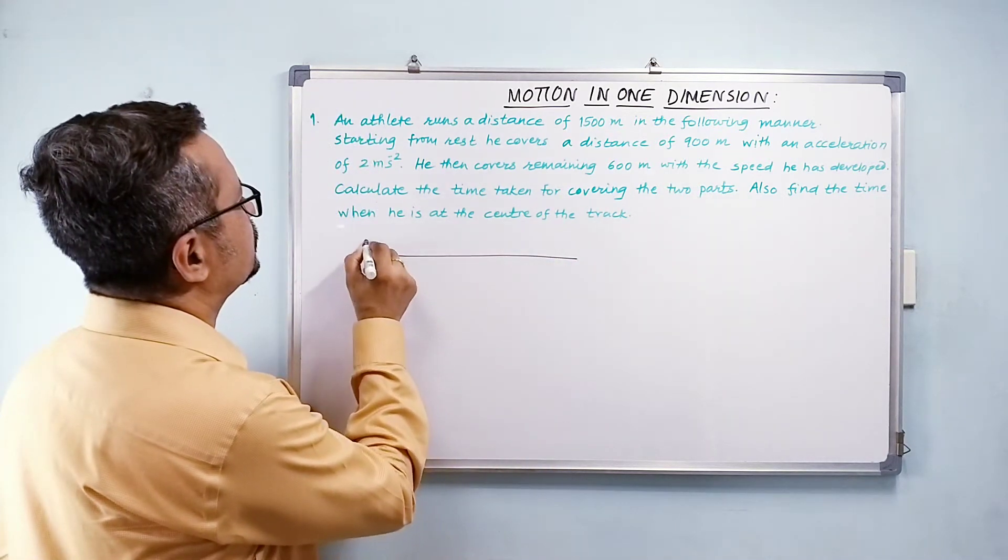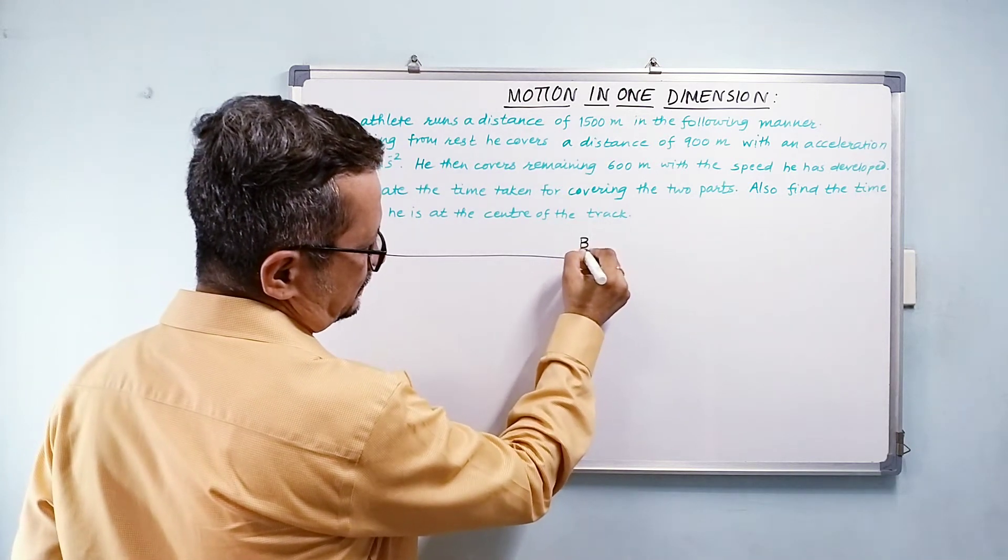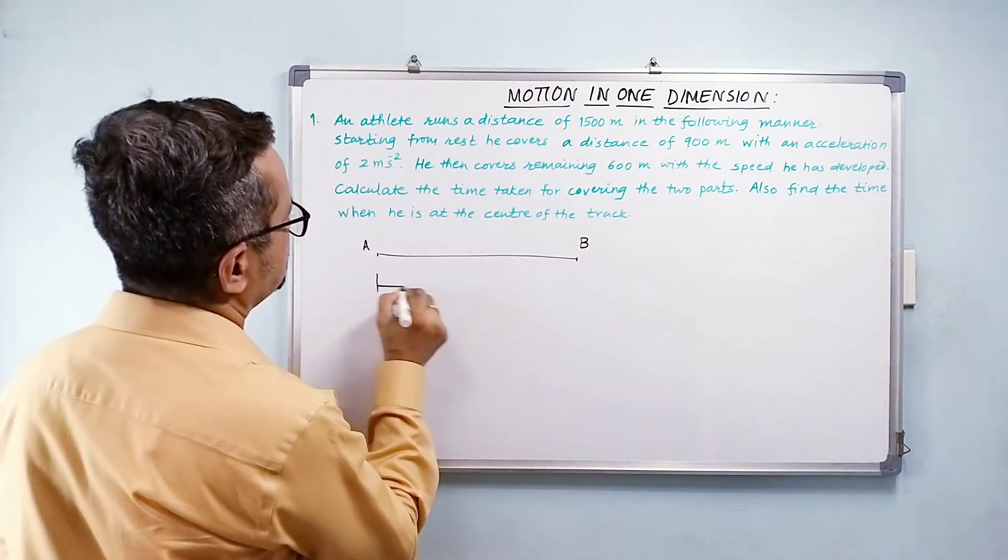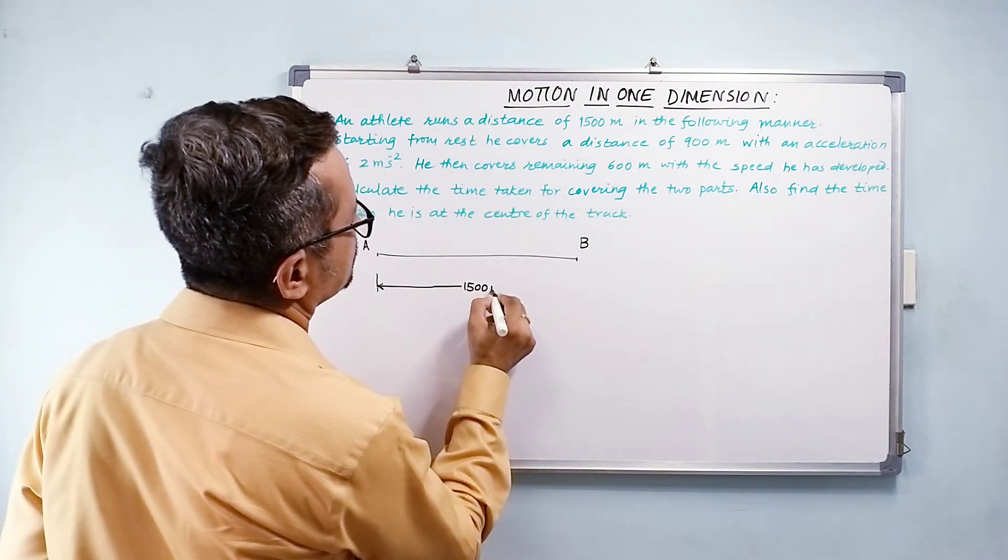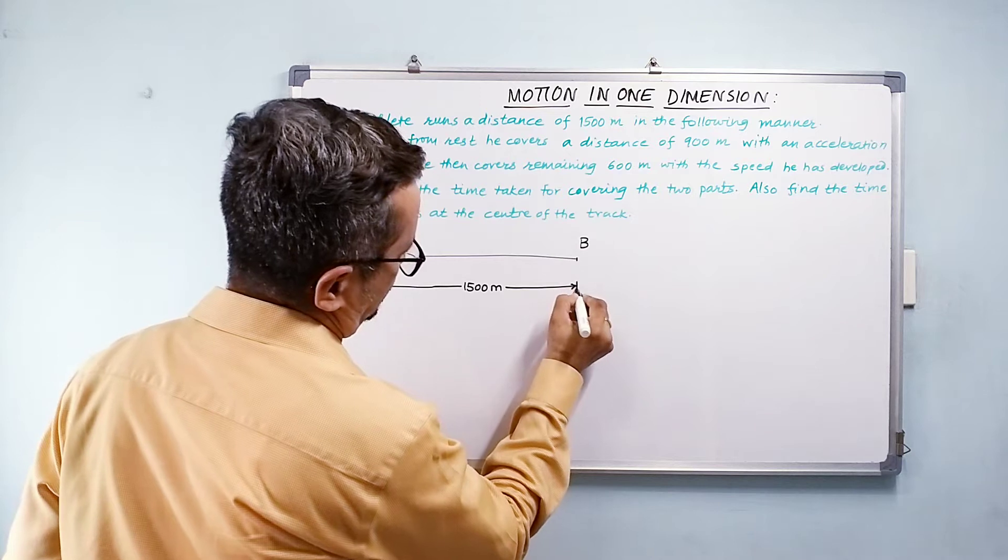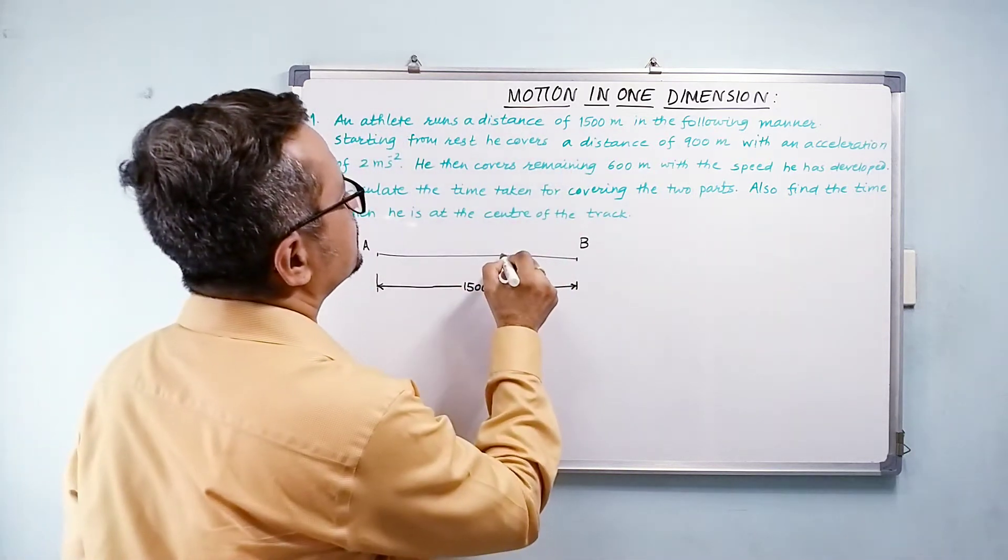So at t equals 0, he is at A and the total length of track is 1500 meters. They say that first 900 meters, that is somewhere here.